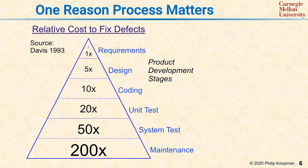An important reason why process quality matters has to do with the cost of finding and fixing defects. This pyramid shows a typical cost ratio of finding and fixing a requirements defect as you get out towards the field. Finding a requirements defect in the design stage costs 5 times as much as if you had fixed it in the requirements stage, 10 times as much in coding, 20 times in unit test, 50 times in system test, and it can cost 200 times more to fix a bug after it's escaped to the field in the maintenance phase.